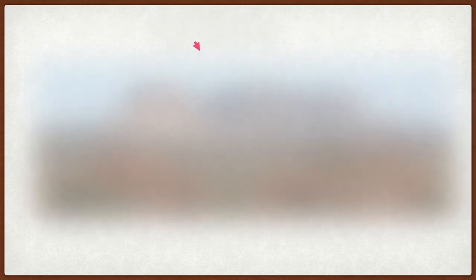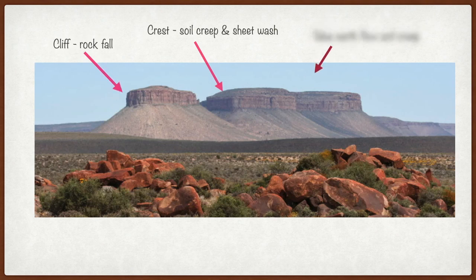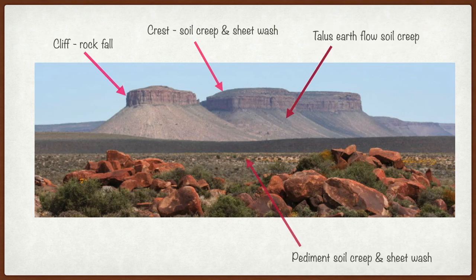So in revision, what do we notice? Soil creep occurs along the crest, and also sheet wash. The cliff has got a rock fall that occurs there from the joints that are in the resistant rock, and so those rocks fall down onto the talus slope.